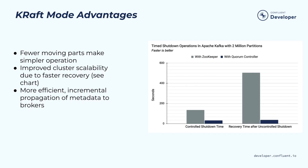Why do we build a new control plane using KRaft? The number one reason is it makes the operation of Kafka a lot easier by removing the number of moving parts. Earlier, there were two separate systems — Kafka and ZooKeeper — you had to manage. Right now, with KRaft, you just have one type of system to deal with. This makes things like deployment, configuration, monitoring, and security much easier and simpler than before.